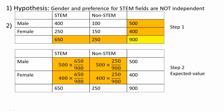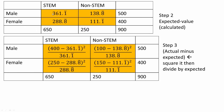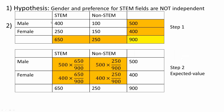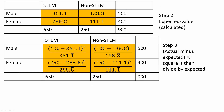Using a calculator: 500 times 650 divided by 900 gives 361.1 repeating. The remaining expected values are calculated similarly. Now we apply the formula: actual minus expected, squared, then divided by expected. For males who preferred STEM, actual is 400, minus the expected value, squared, divided by that expected value.